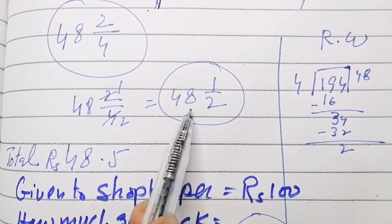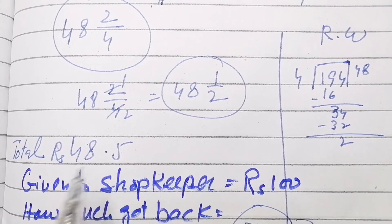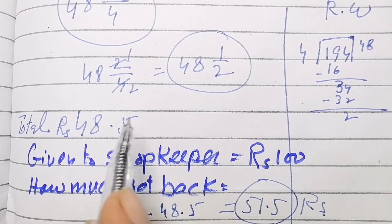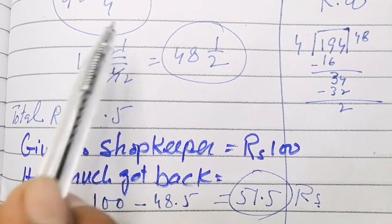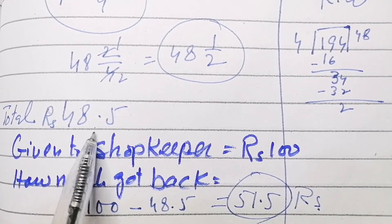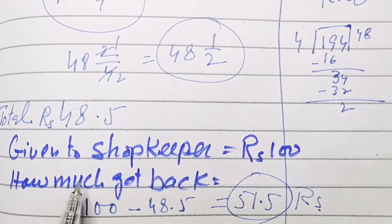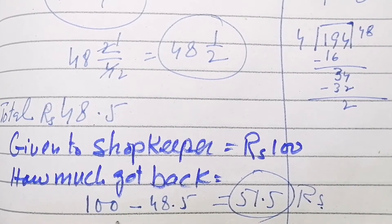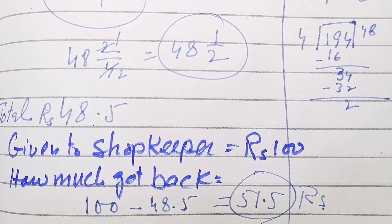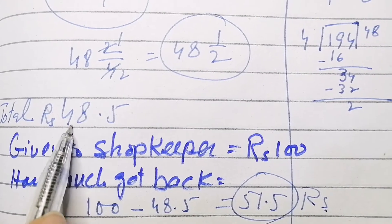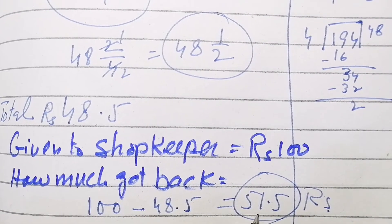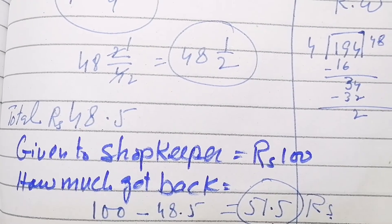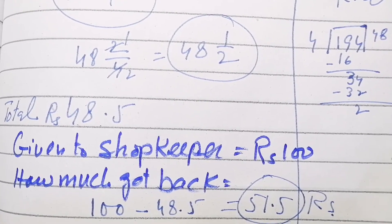We can simplify 48 whole 2 over 4 to 48 whole 1 over 2, which equals 48.5. This is the total cost of wheat, rice, and vegetables. The customer gave 100 rupees to the shopkeeper, so subtracting 48.5 from 100 gives 51.5 rupees as the change. That's all for today, thank you very much.